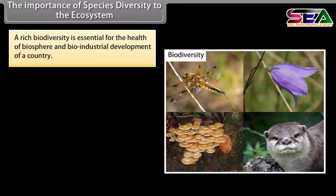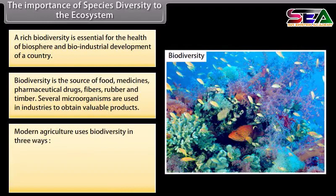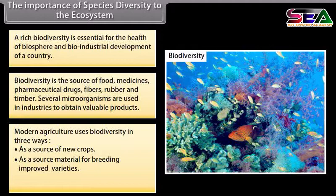The importance of species diversity to the ecosystem. Rich biodiversity is essential for the health of the biosphere and bio-industrial development of a country. Biodiversity is the source of food, medicines, pharmaceutical drugs, fibres, rubber, and timber. Several microorganisms are used in industries to obtain valuable products. Modern agriculture uses biodiversity in three ways: as a source of new crops, as a source material for breeding improved varieties, and as a source of new biodegradable pesticides.